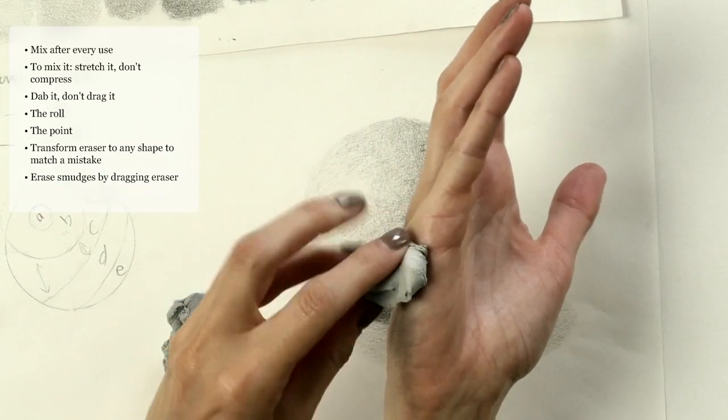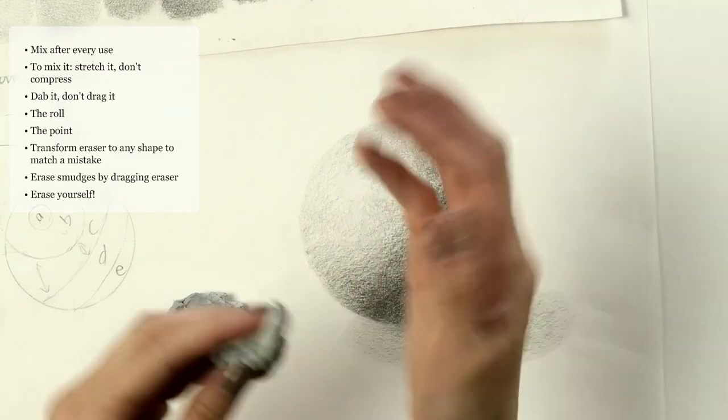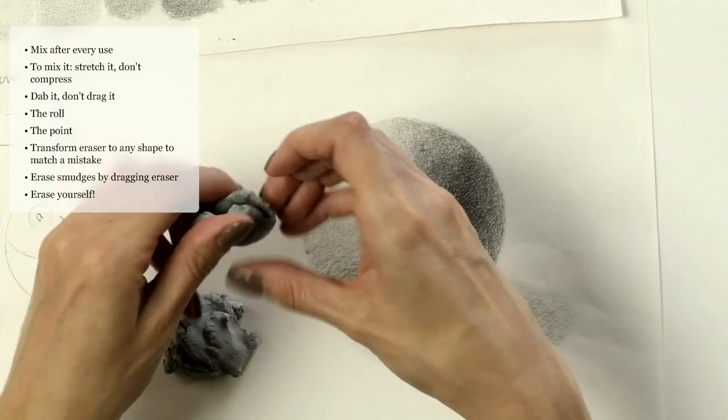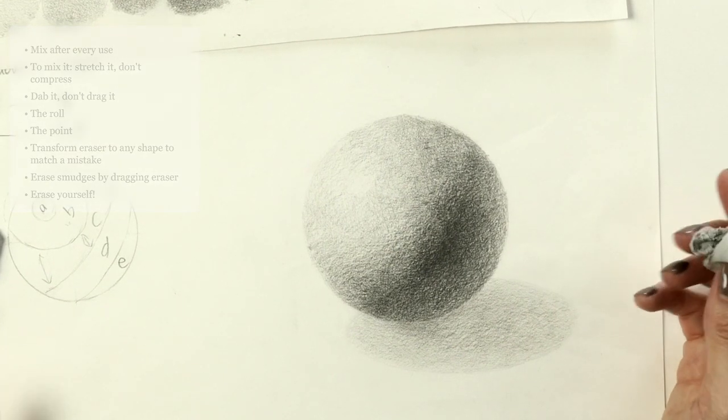This is the last way you can use it: you can erase yourself. If you drag your hand over your page by accident and get some graphite on your hand, you can erase yourself. That way you don't have to spend all your time getting up and washing your hands.